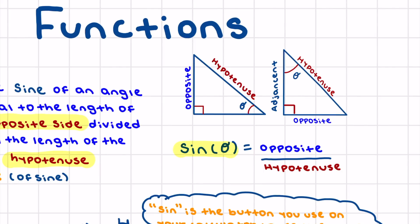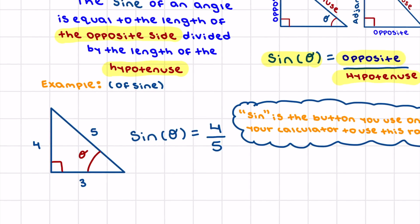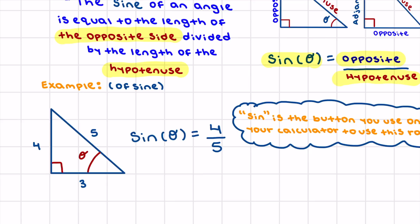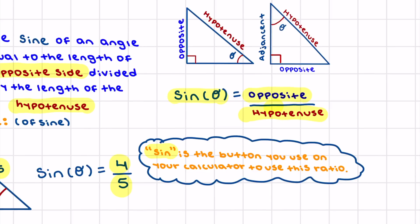So sine theta equals opposite over hypotenuse. In our example, theta is pointing opposite to the side of length 4, and the hypotenuse is 5, so sine theta equals 4 over 5. You will also see a sine button on your calculator to use when solving these problems.